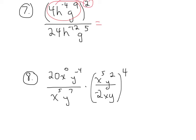So I'm going to raise each term inside to the exponent of 2. So that will become 4 squared, h to the negative 8th, and g to the 18th. When you have a power of a power, you multiply the exponents. In the denominator, we can keep 24, h to the negative 12, g to the 5th.